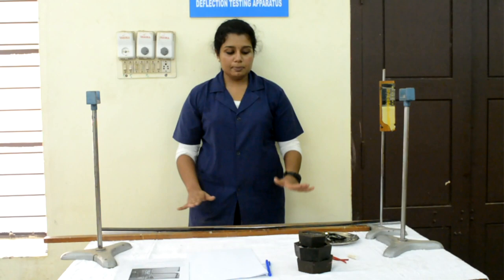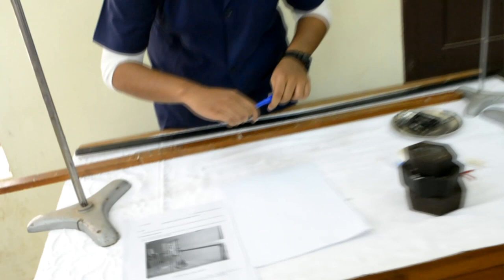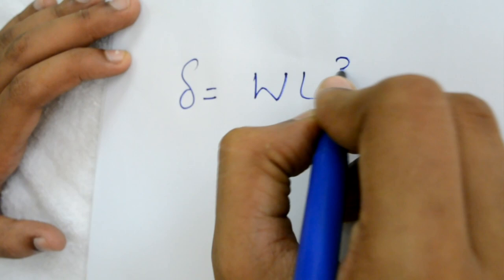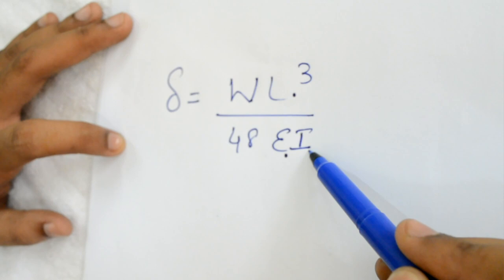Now the principle behind this is that when we apply a concentrated load at the midpoint in a simply supported beam, the deflection is given by the formula delta equals WL cubed by 48EI, where W is the load, L is the span, E is the modulus of elasticity, and I is the moment of inertia.